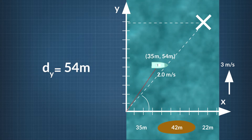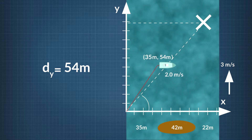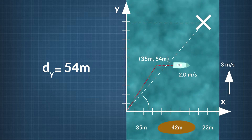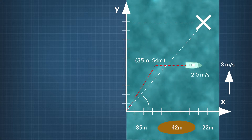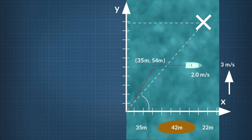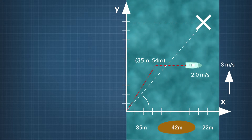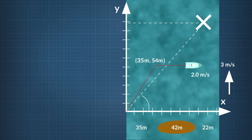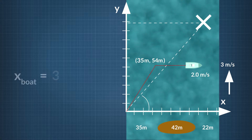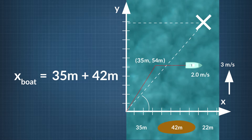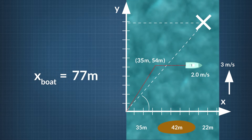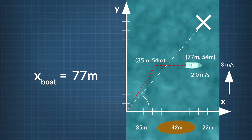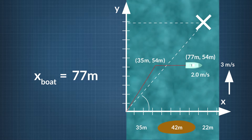Now the boat crosses behind the sandbar, so there is no downriver current pushing on it. Let's assume the boat quickly loses all its vertical momentum, so that for this leg, the boat travels straight ahead across the river. After the second leg of the journey, the boat has moved 35 plus 42 meters, or 77 meters, across the river, and is 54 meters downstream from its starting point.